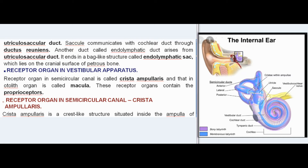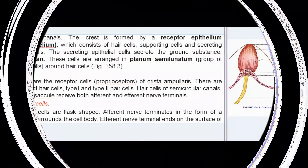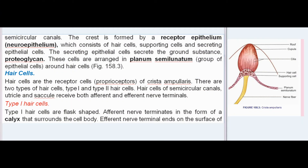The receptor organ in the semicircular canal is called crista ampullaris, and in the otolith organ it is called macula. These receptor organs contain proprioceptors. The crista ampullaris is a crest-like structure inside the ampulla, formed by a receptor epithelium (neuroepithelium) consisting of hair cells, supporting cells, and secreting epithelial cells. The secreting epithelial cells secrete the ground substance, proteoglycan, and are arranged in the planum semilunatum around the hair cells.